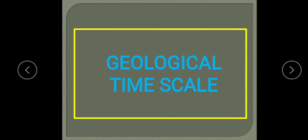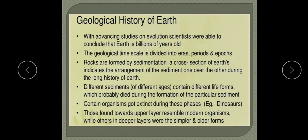The geological time scale covers the whole span of earth's history to correlate events in proper sequence, allowing us to know the various events that took place on earth. The earth's crust consists of layers of rocks lying one on top of the other. Radioactive dating techniques have revealed that earth is approximately 3,500 million years old. On the basis of time, the geological history of the earth has been divided into five eras.